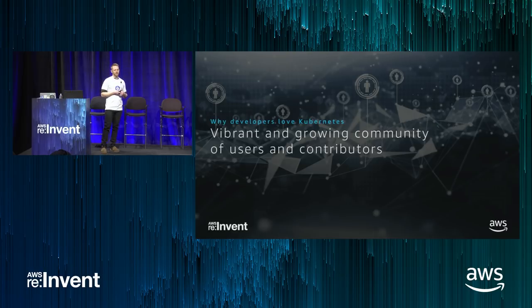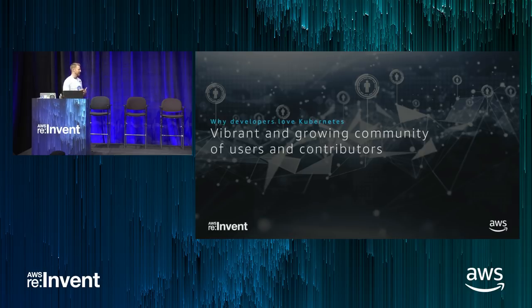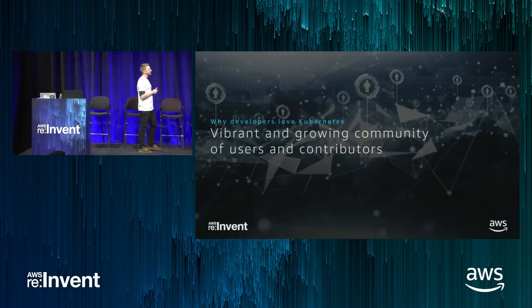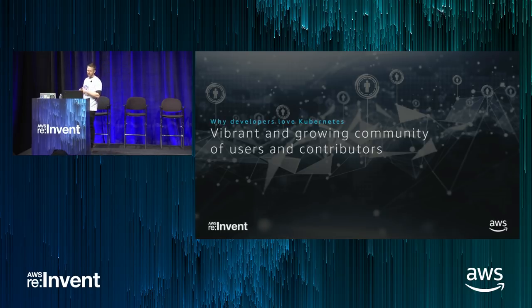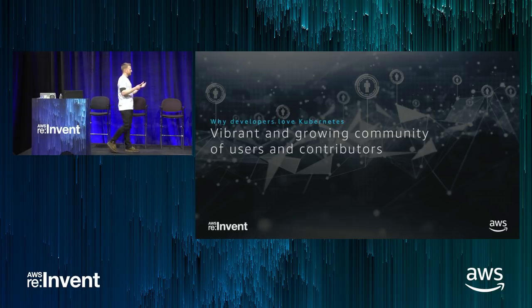Looking at some concrete numbers, the repository on GitHub has almost 400,000 comments, almost 30,000 stars, almost 60,000 commits, and over 1,500 individual contributors. So by any metric it's extremely popular. In terms of commit velocity, it's number one on GitHub today. Those are some impressive numbers regardless.